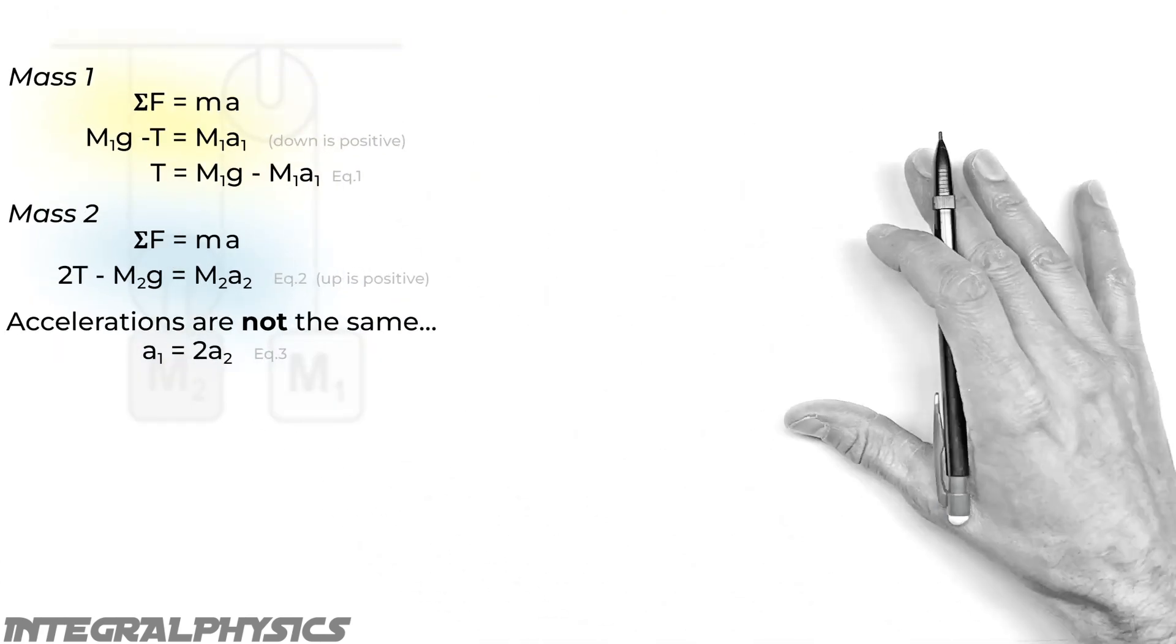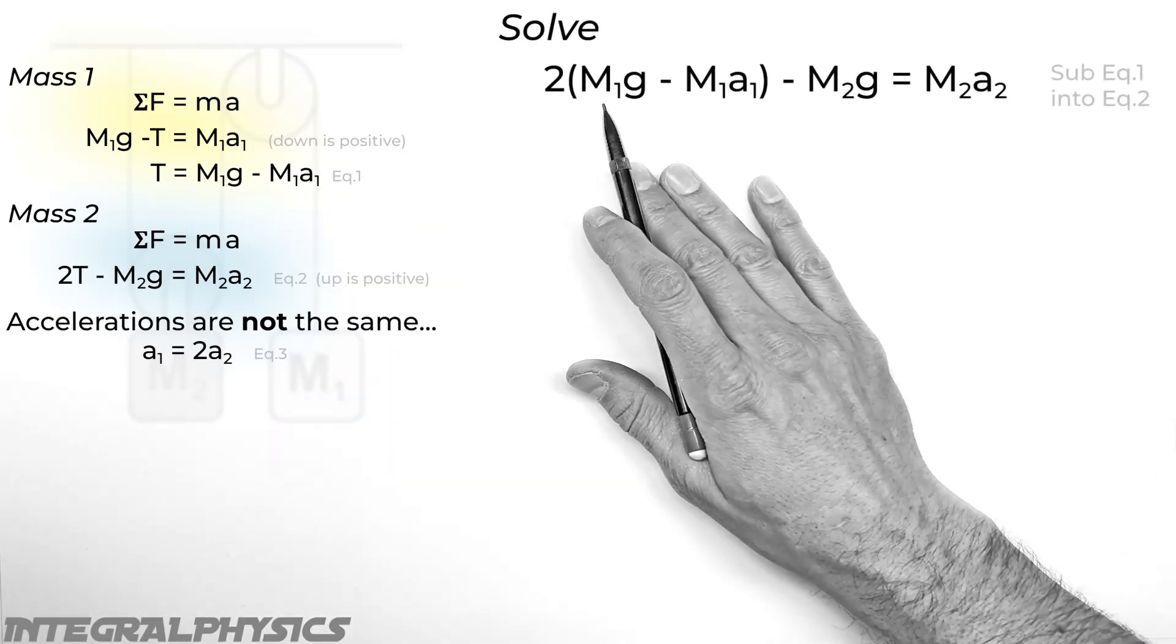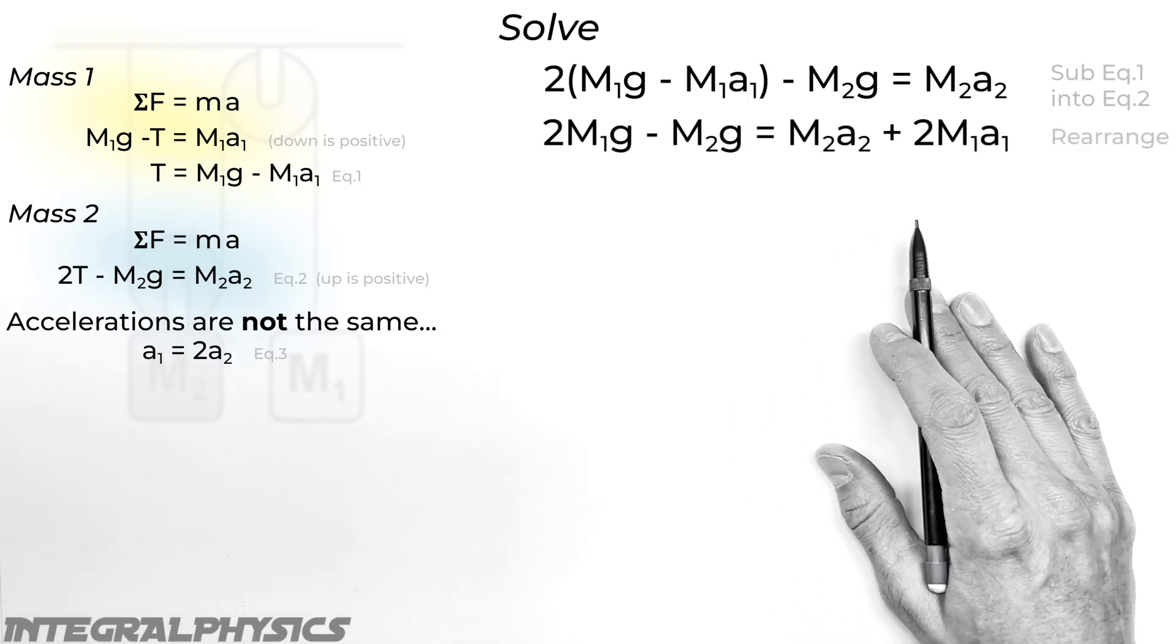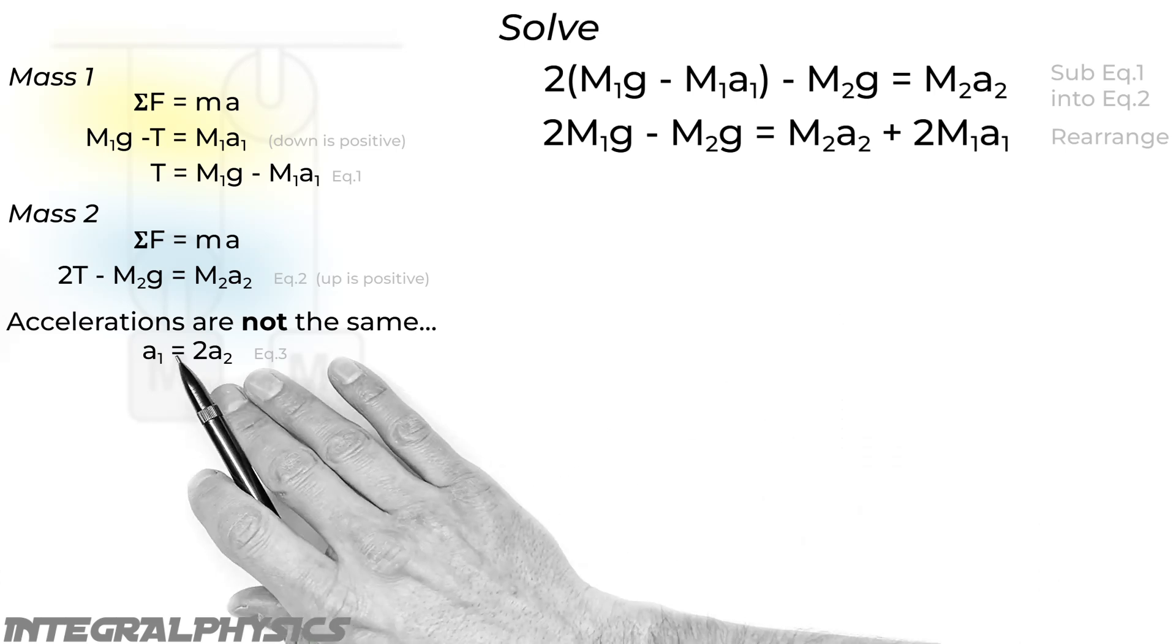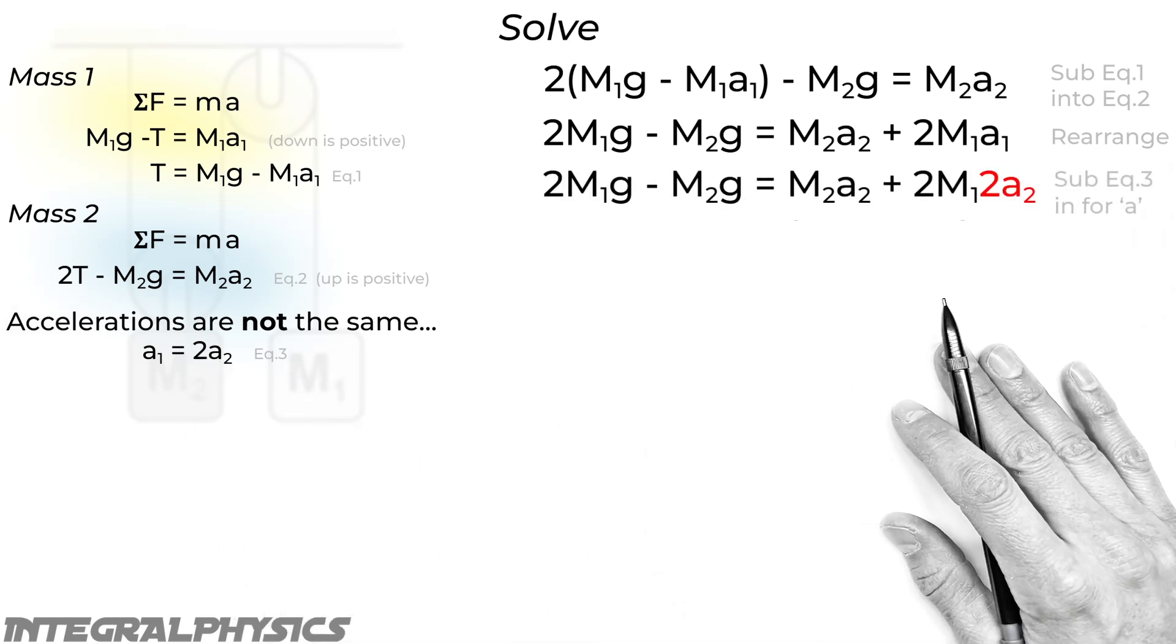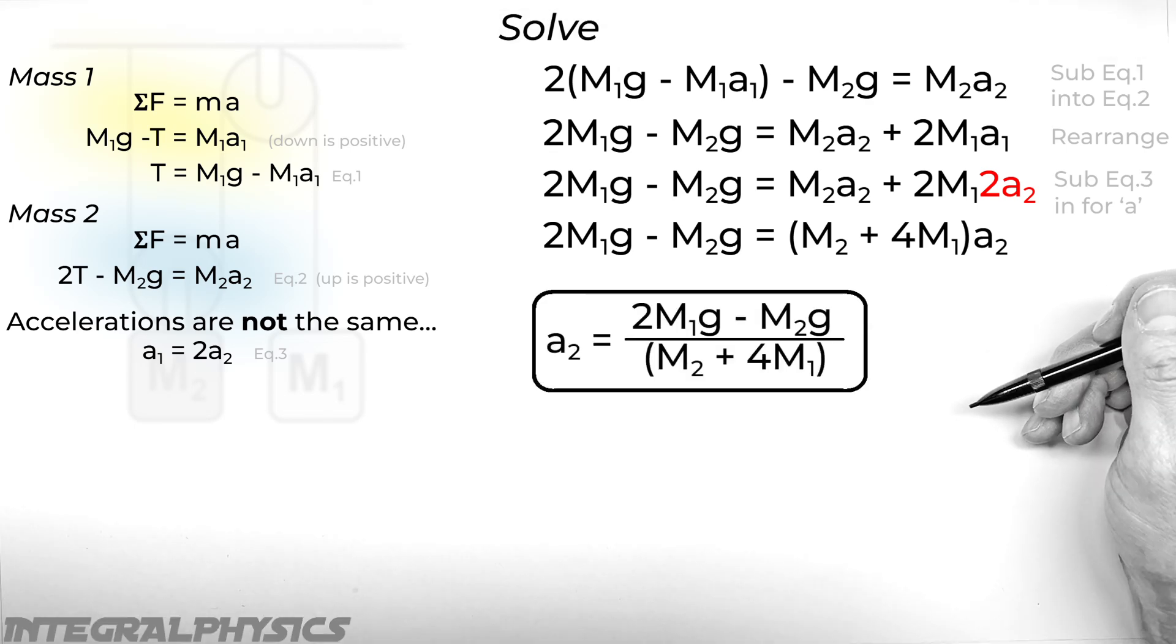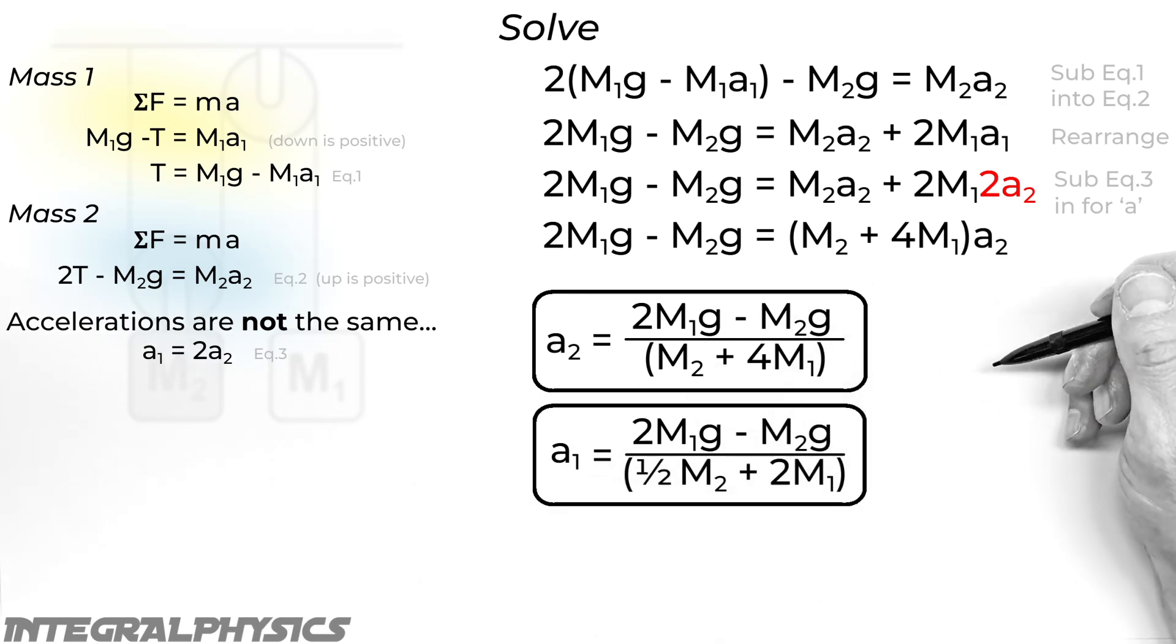So moving this over here, so we've got some room for activities. We're going to take equation one and sub it into equation two here. And then we'll rearrange that to get all our A's on one side. And you'll notice we still have an A2 and an A1. So what we're going to need to do is take this third equation and sub it in here. And that's going to allow us to solve for A2. This is the acceleration of block two as a function of our two masses, as well as gravity. Now again, taking and applying this third equation to our acceleration for A2, we can come up with an expression for A1.